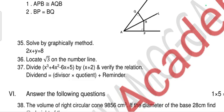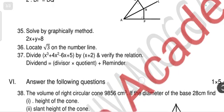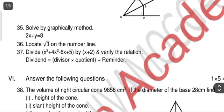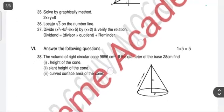Question 35: solve by graphical method — that is a linear equation problem you should already know. Next, locate √3 on a number line — that you know as well. Then for question 37, perform polynomial division and verify the relations.